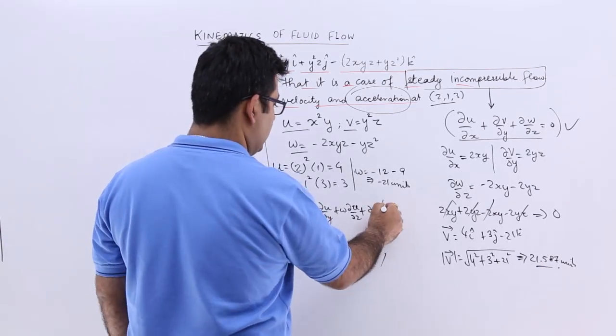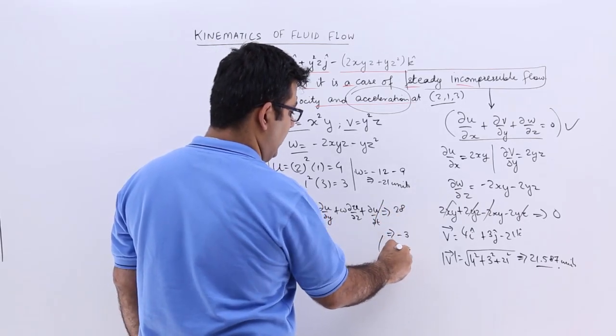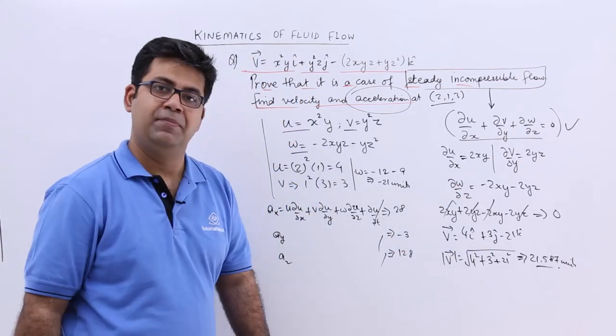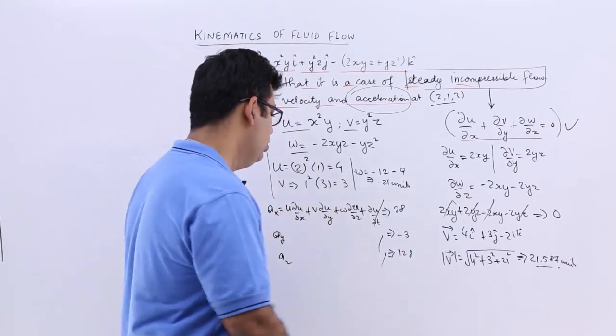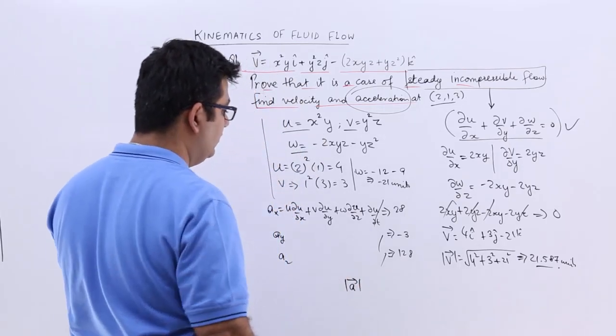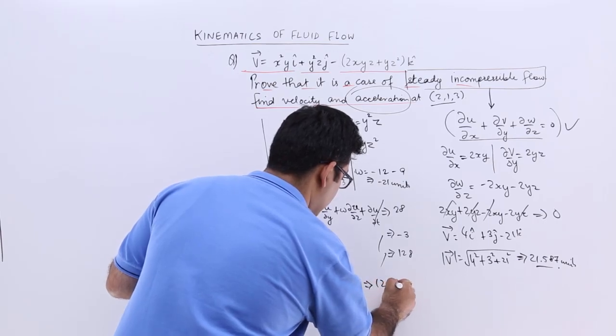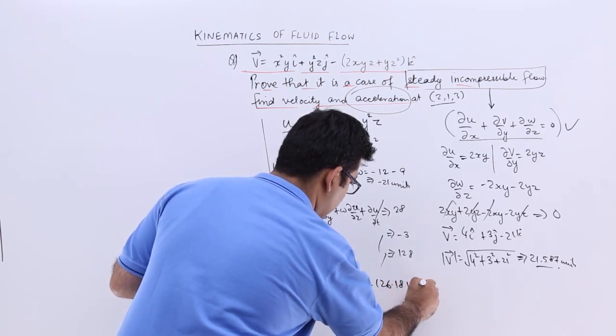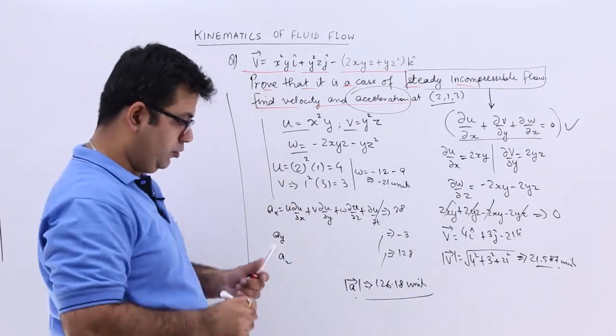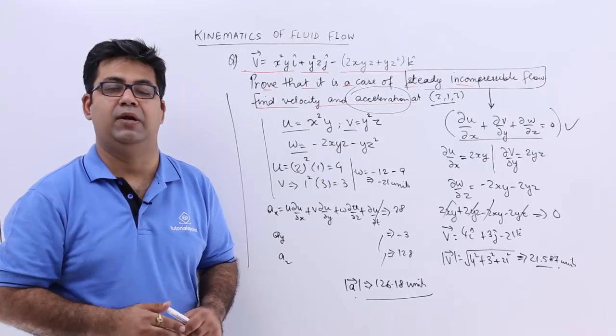You will find out these individual values, so Ax should come out to be 28, Ay should come out to be -3 and Az should come out to be 128. So when you calculate the magnitude of acceleration, this would come out to be 126.18 units. So this is one more question on the concept of velocity and acceleration of a fluid particle.